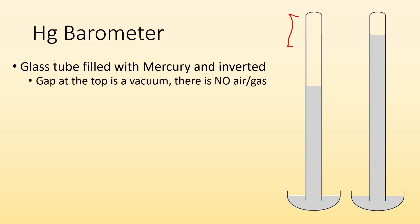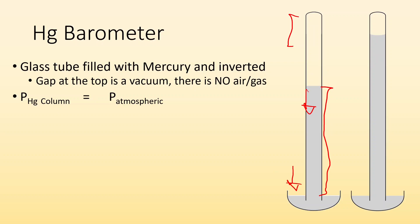The gap at the top is a vacuum — there is no air or gas up there. That tells us that the pressure from the column of mercury pushing down, because gravity is pulling on it, has to be equal to the pressure of the atmosphere pushing down on the pool of mercury below. They're in equilibrium — the pressures are equal.